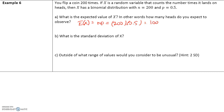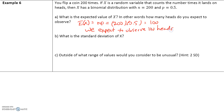200 times 0.5 equals 100. So we expect to observe 100 heads, which means if you flip a coin 200 times, we expect that about 100 times it'll land on heads, which hopefully makes sense.